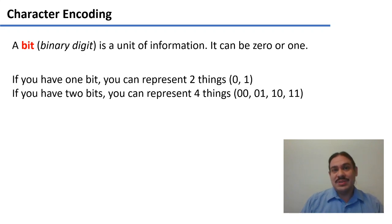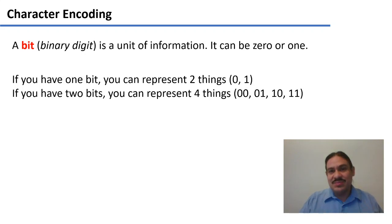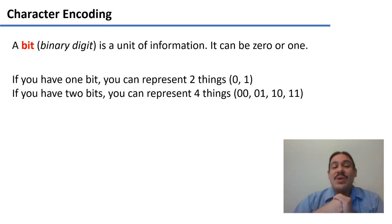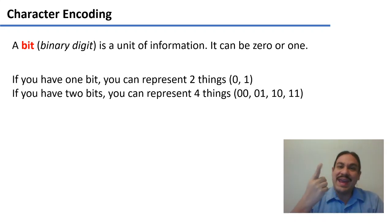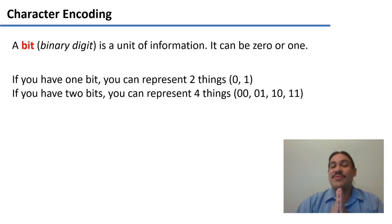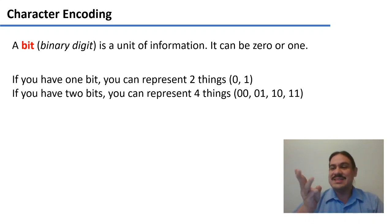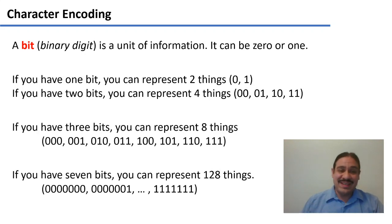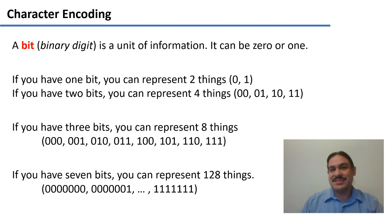In computers we use electricity in a different way. We have a unit called a bit — a binary digit — which is our basic unit of information, and it can be zero or one. If you have one bit, you can represent two things: zero or one, so A or B, and that's it. If you have two bits, you can represent four things: the combinations 00, 01, 10, 11 — A, B, C, D. If you have three bits you can represent eight things; if you have seven bits, you can represent 128 things, and this is when things begin to get interesting.